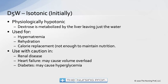D5W is initially isotonic but physiologically becomes hypotonic once the dextrose is metabolized, leaving just water. It's used in cases of hypernatremia to help dilute sodium, for rehydration, and for calorie replacement — though it only provides a couple hundred calories per day, not enough to maintain full nutrition. Use caution in renal disease and heart failure due to risk of volume overload, and in diabetes due to risk of hyperglycemia.